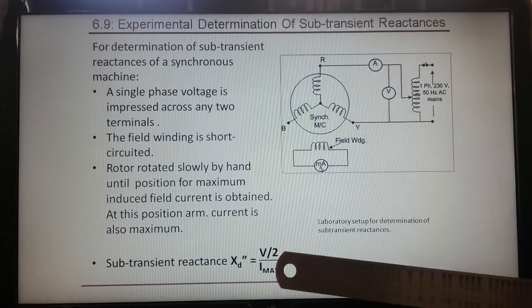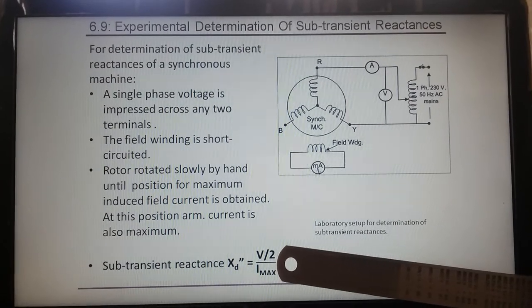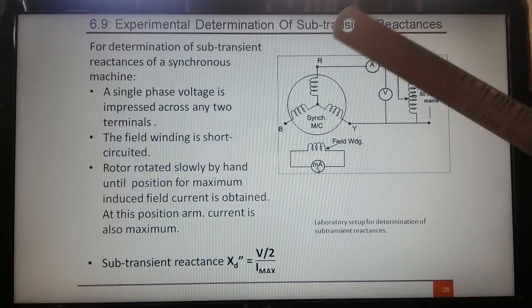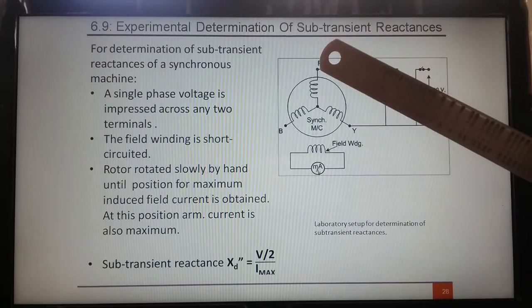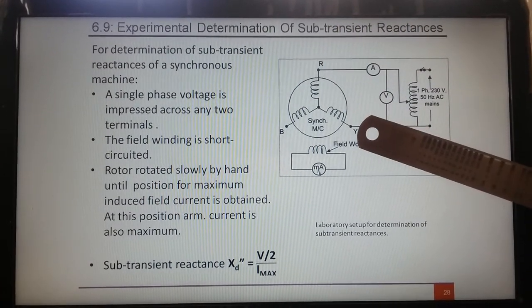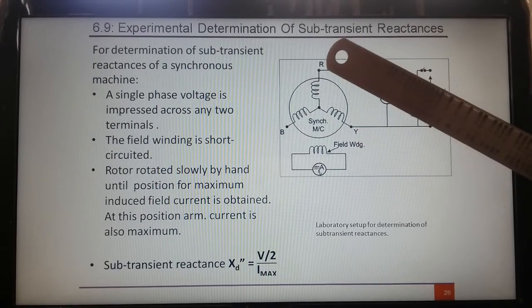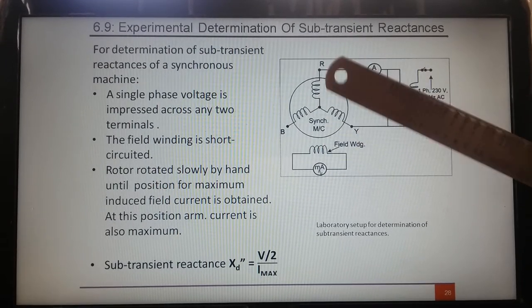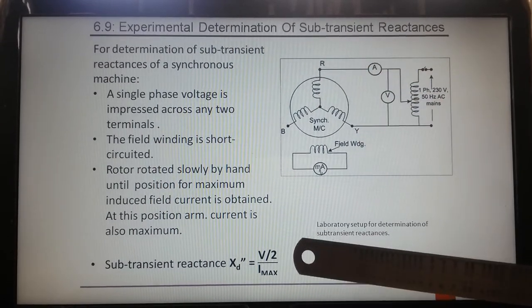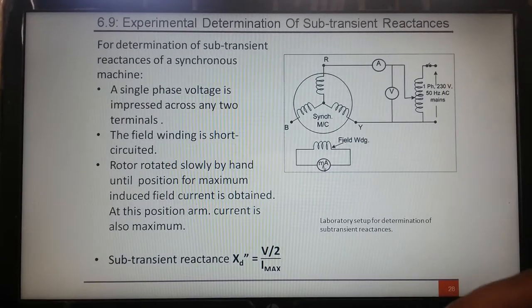The maximum current is recorded, and the voltage in the numerator is V by 2, because the voltage is impressed across two terminals, so for one phase you need to divide by 2. That gives XD double dash.